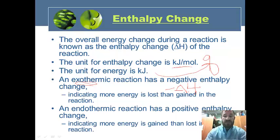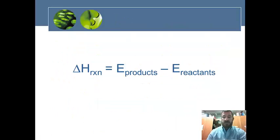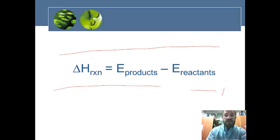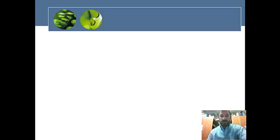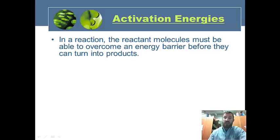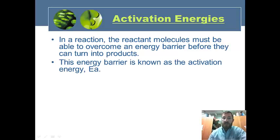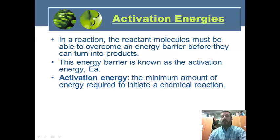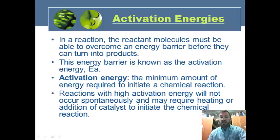An endothermic reaction has a positive enthalpy change, indicating more energy is gained than lost — a positive delta H. The formula is: delta H of the reaction equals energy of the products minus energy of the reactants. A way to remember this is alphabetical order — P comes before R. Activation energy is the minimum energy required to initiate a chemical reaction. Reactions with high activation energy may require heat or a catalyst to start.